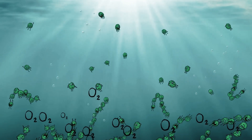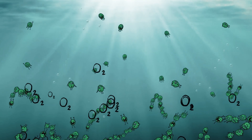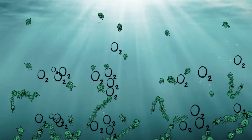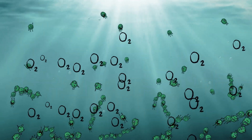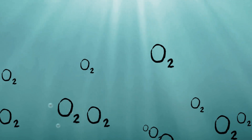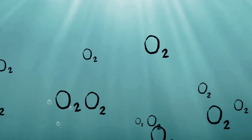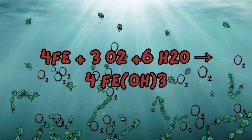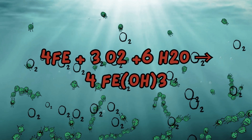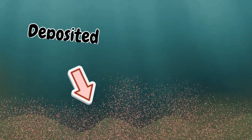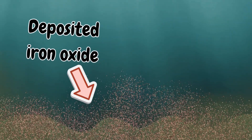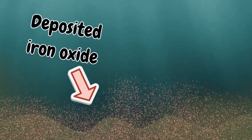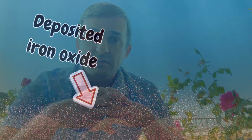Through photosynthesis, cyanobacteria began to release oxygen into their environment. It started slowly, bubbling out of the water and reacting with the dissolved iron in the oceans. This is why we have the massive geological formation called banded iron formation today.